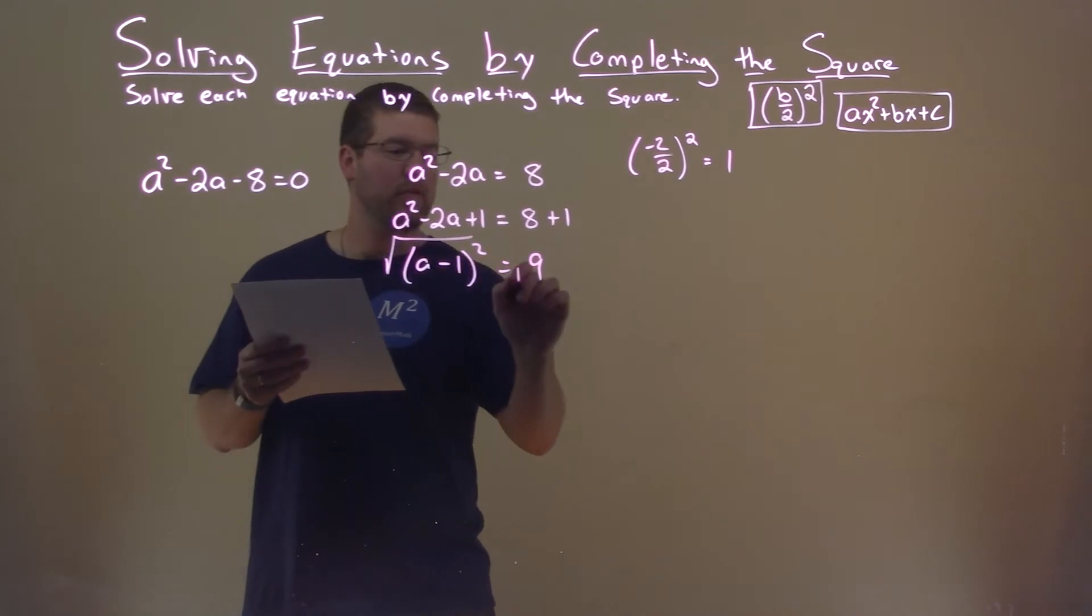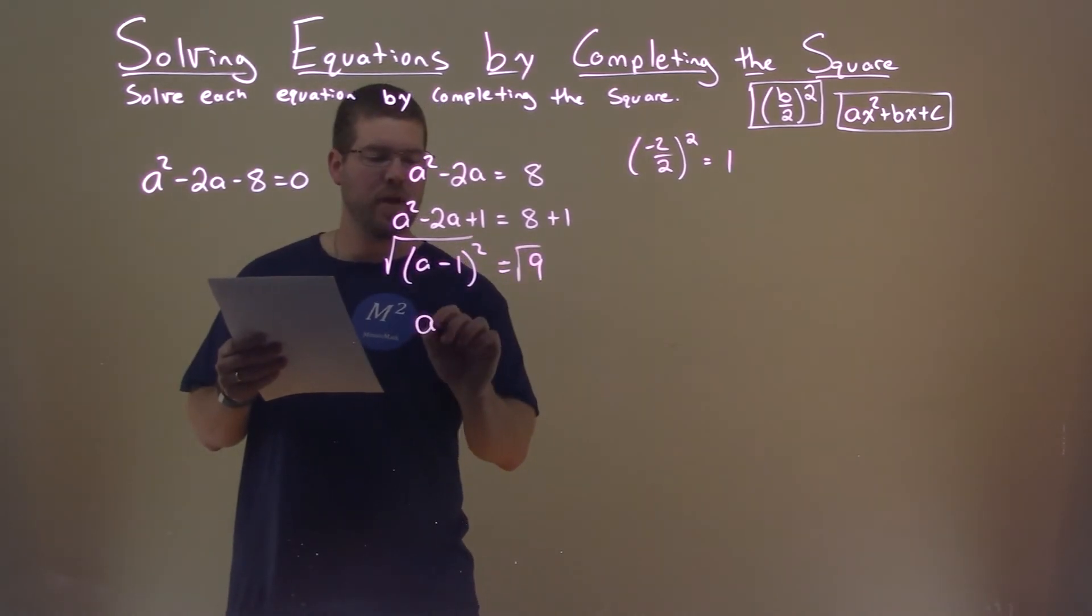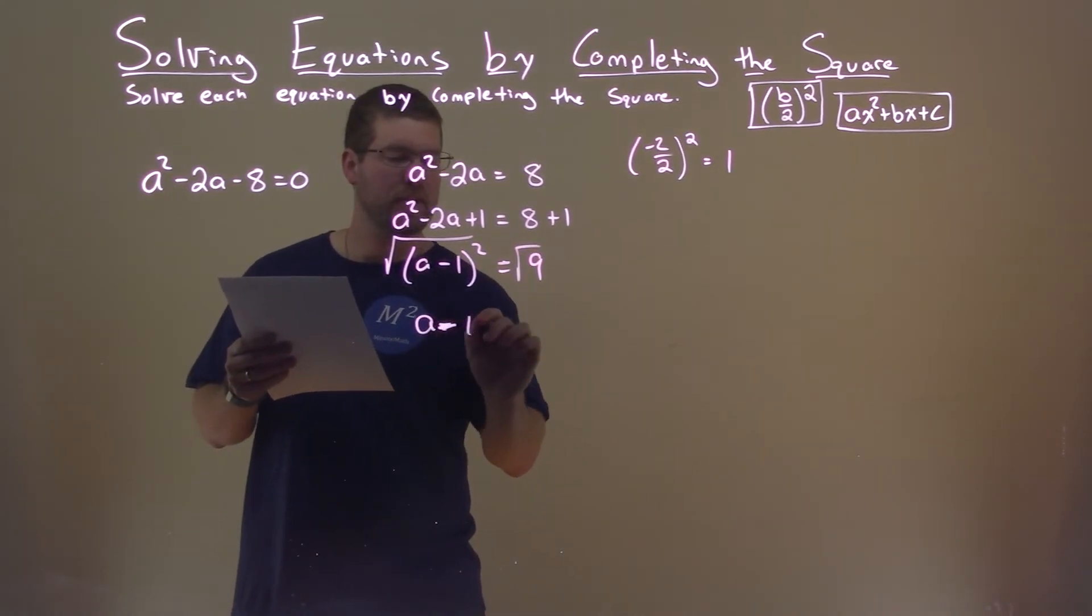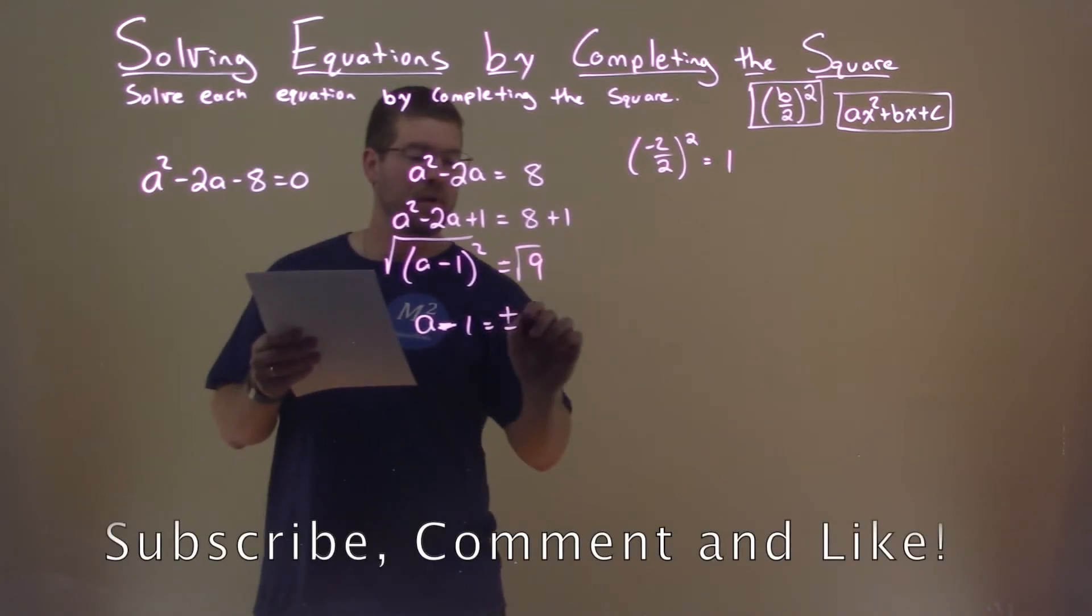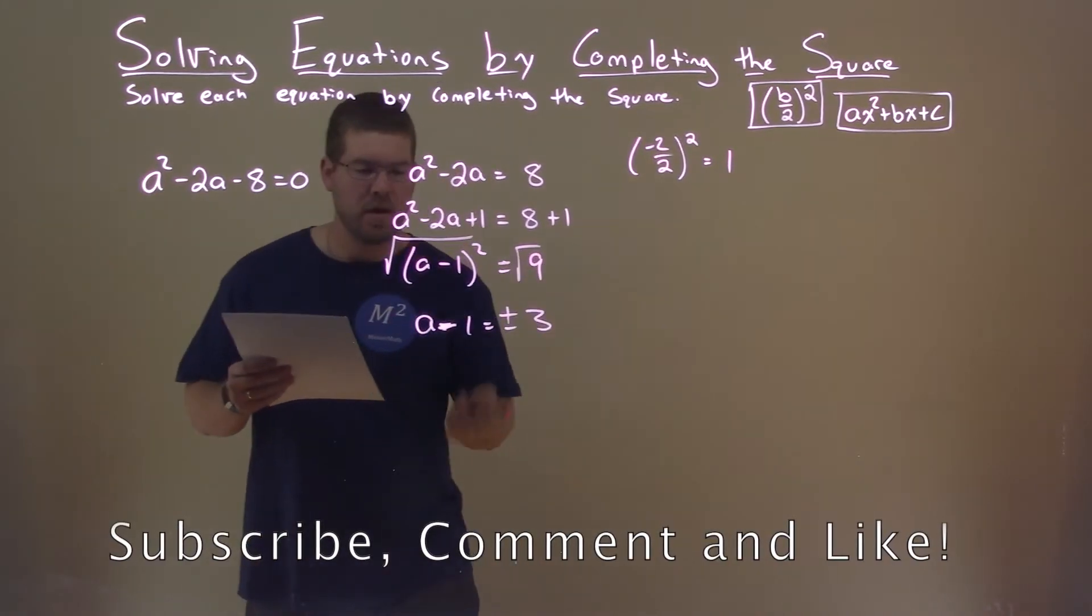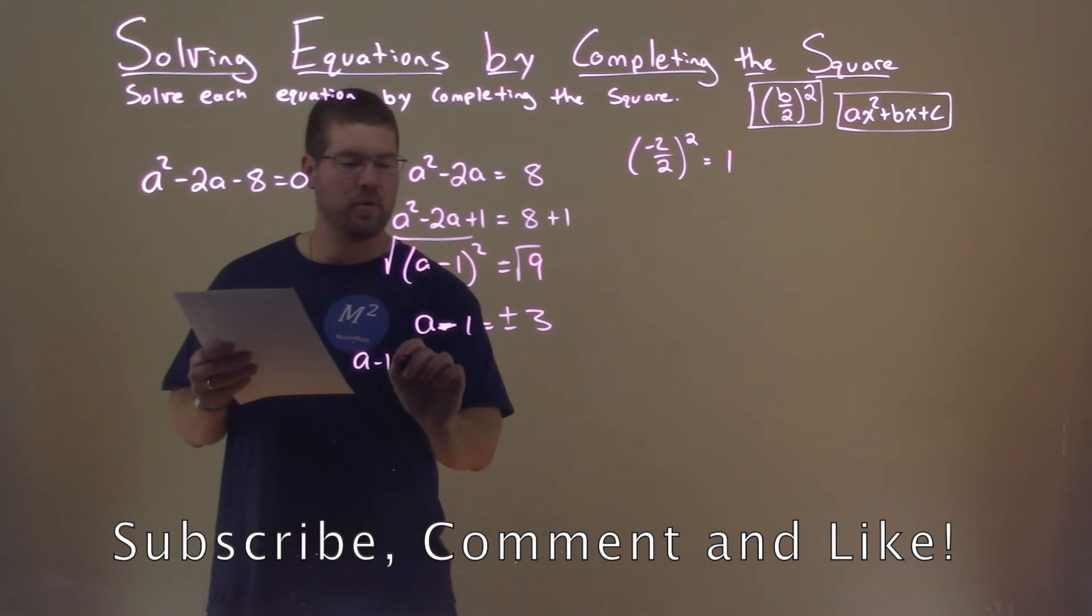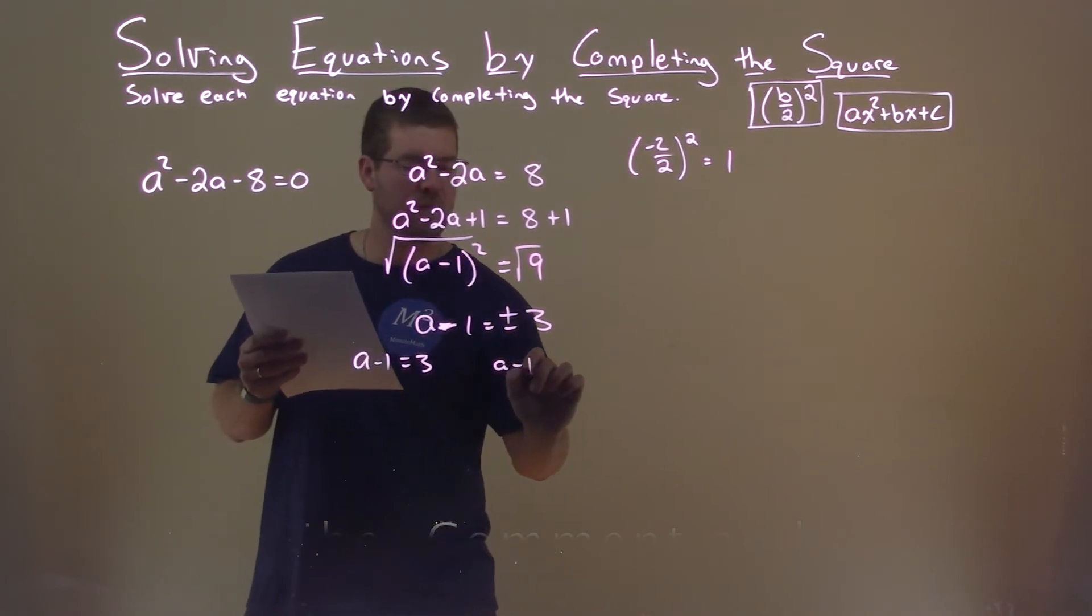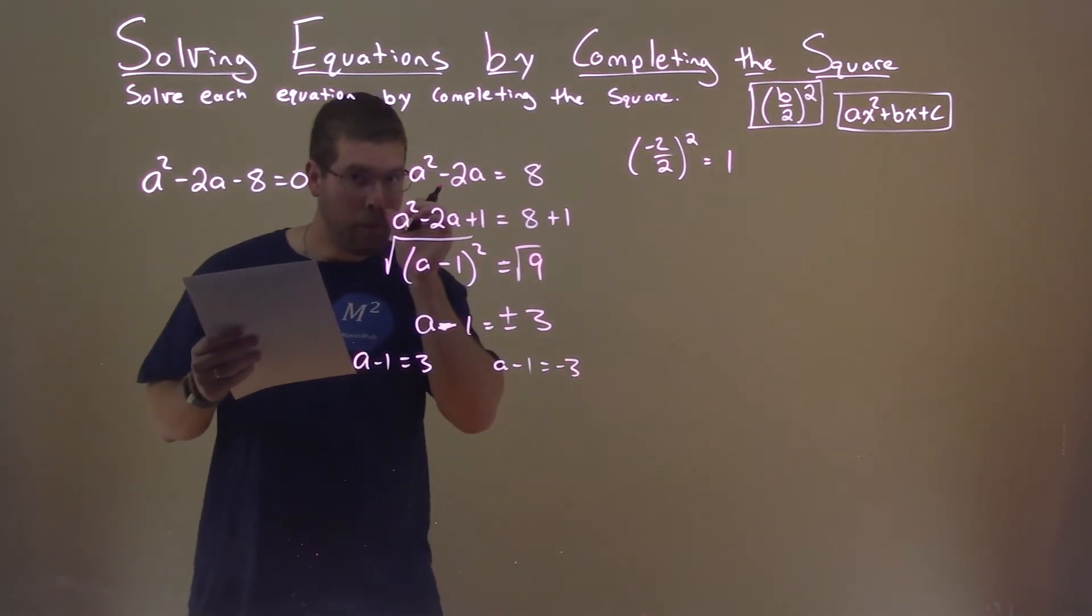Now we take the square root of both sides of the equal sign. We have a minus 1 left over, and the square root of 9 is plus or minus 3. Now I can break this down to be a minus 1 equals positive 3, and a minus 1 equals negative 3, and solve both of them.